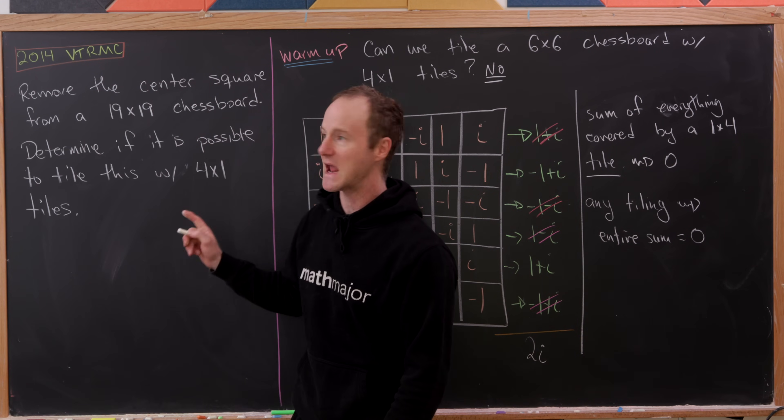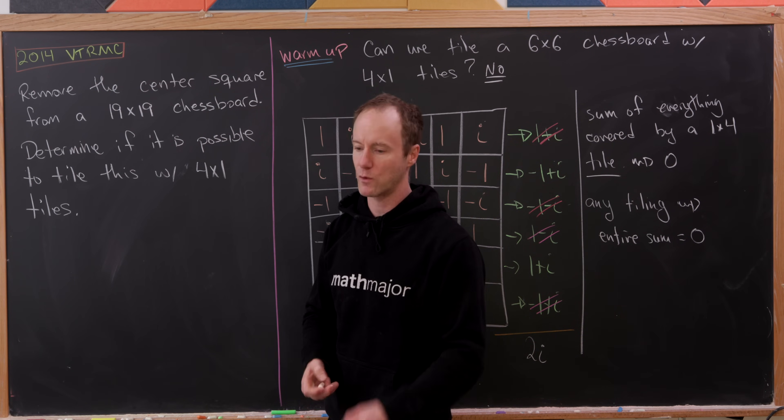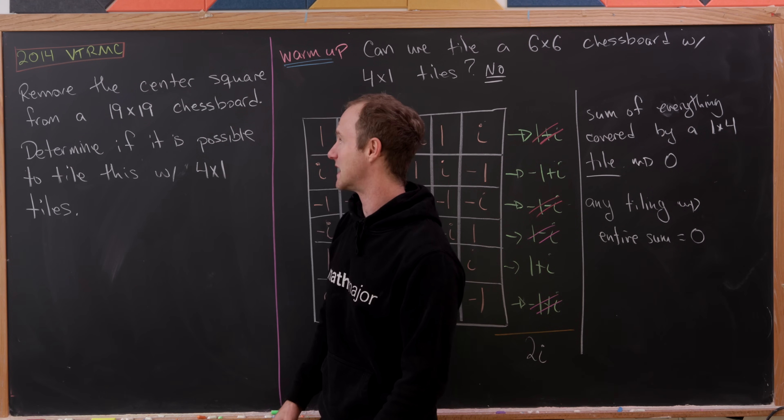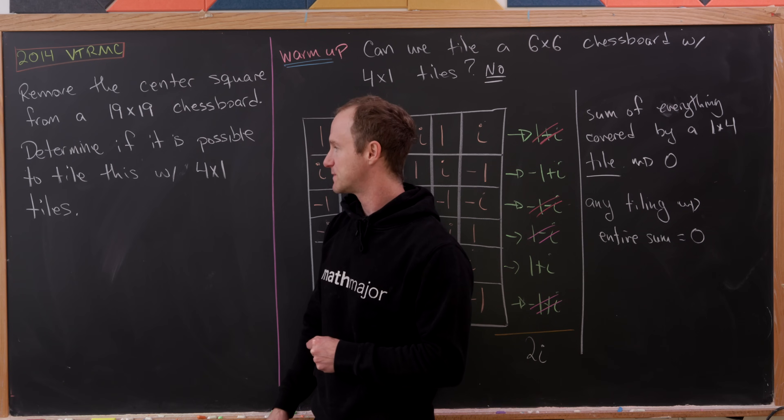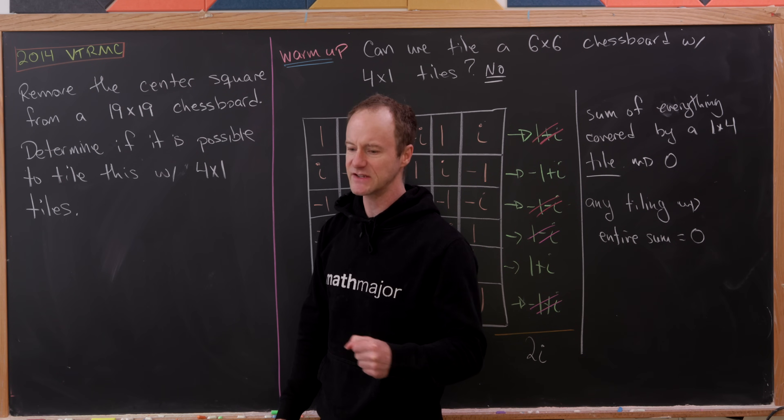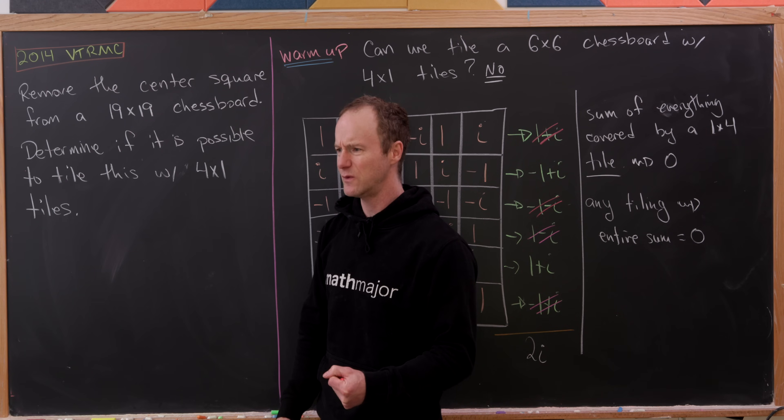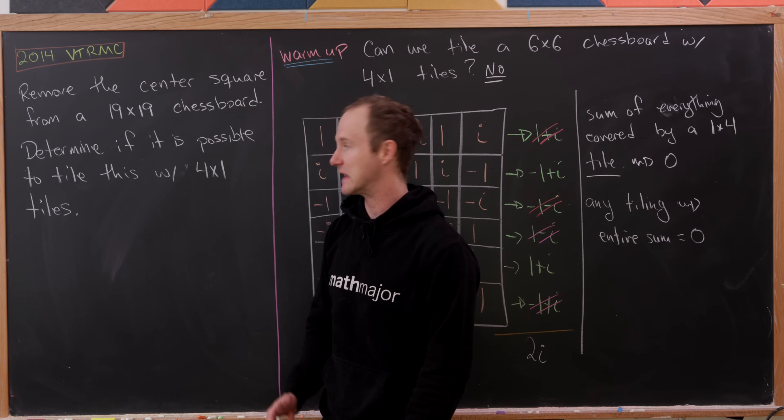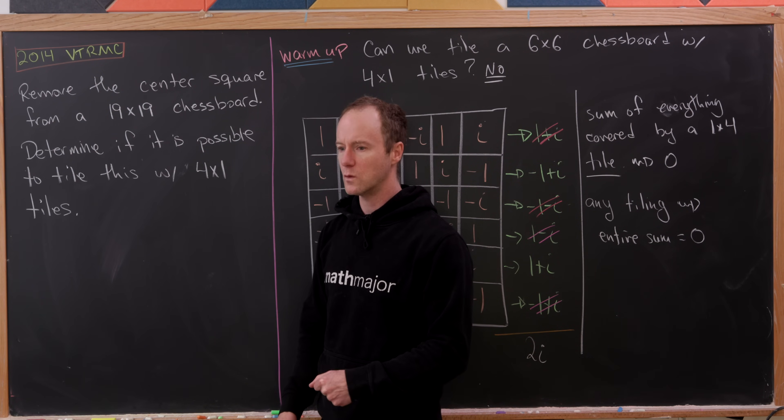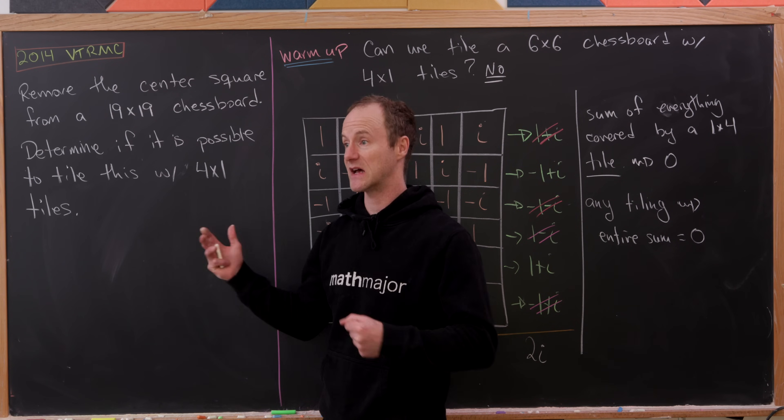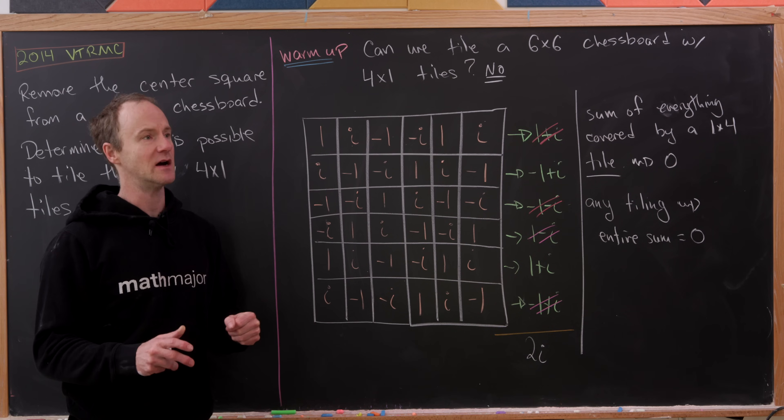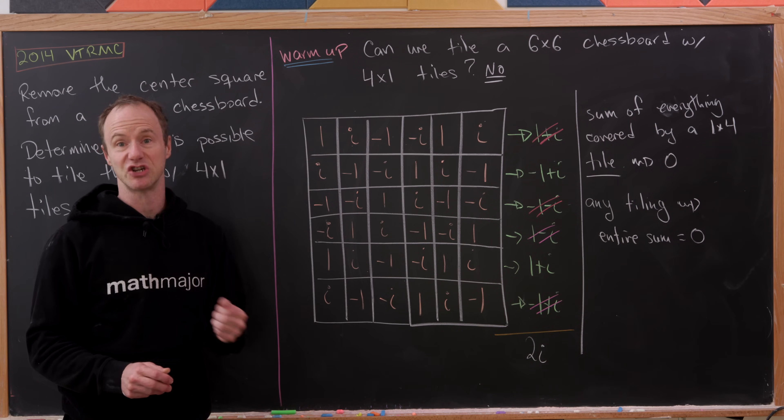Now let's move on to our main question over here, which is a little bit more complicated, but we'll use a similar trick. Let's suppose we remove the center square from a 19 by 19 chessboard. Now we want to determine if it's possible to tile this with 1 by 4 or 4 by 1 tiles. And I guess I should say here that the answer is probably no, because it would be hard to build such a tiling if it existed, unless it were super obvious. So we want to have our first guess as to the possibility here to be no. And we're going to use a similar strategy to this right here.